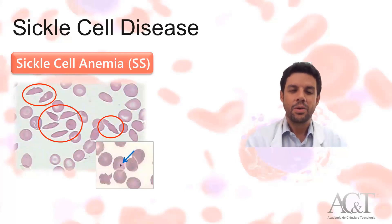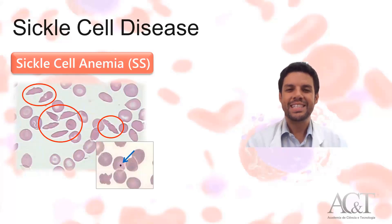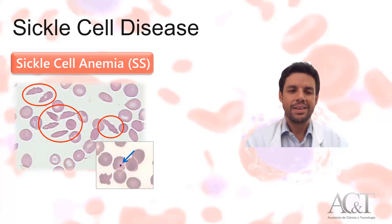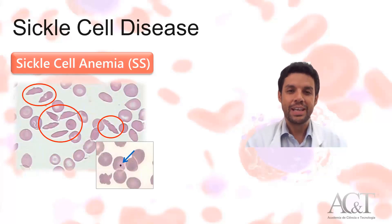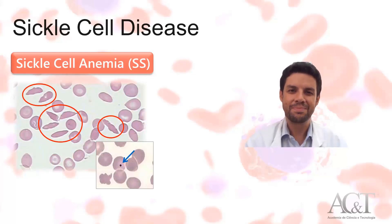Another morphologic abnormality usually seen in these patients are the Howell-Jolly bodies, which is indicated by the arrow. These are DNA remnants, and they usually signify that the splenic function is not okay, which is very common in these patients.